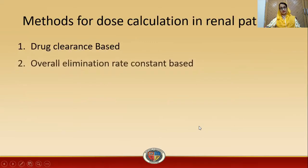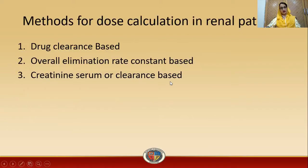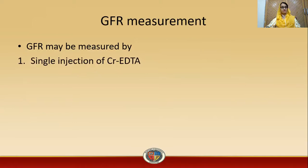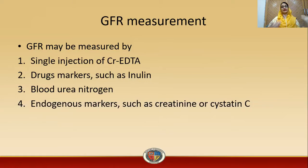Methods for dose calculation in renal patients are: drug clearance-based, overall elimination rate constant-based, and serum creatinine or creatinine clearance-based. For GFR measurement, GFR may be measured by a single injection of creatinine EDTA. After administration, urine samples are collected to estimate how much drug is excreted, allowing calculation of how much was administered versus eliminated.